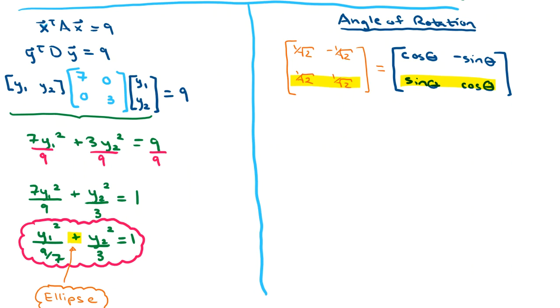We know from a result way at the beginning of the class that the only way two matrices are going to be equal to each other is if the corresponding entries are equal to each other. So that said, we can form a couple of equations here.